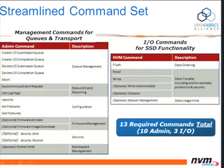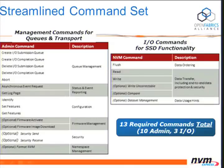The streamlined command set has basically 13 commands total: 10 administrative and 3 I/O, plus some optional commands. In comparison, SCSI Express has over 100 commands. So 13 compared to over 100 is a substantial reduction in complexity.